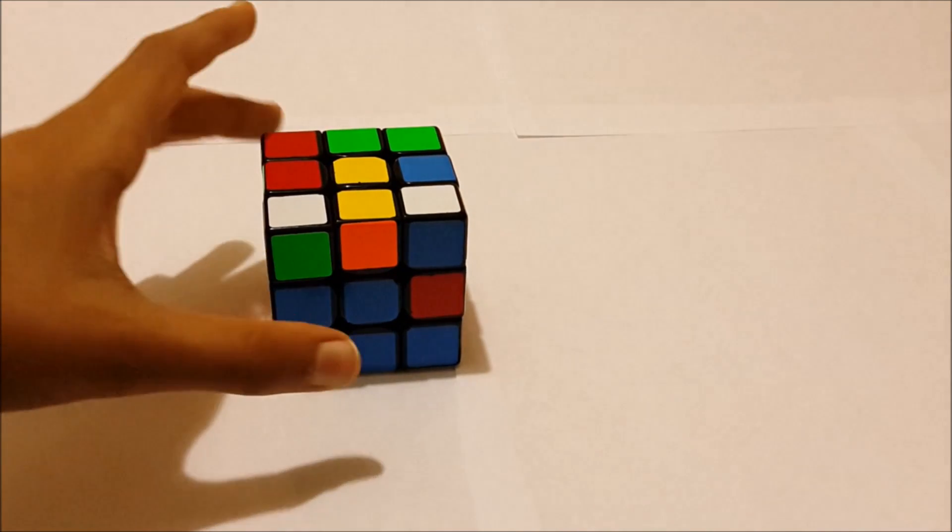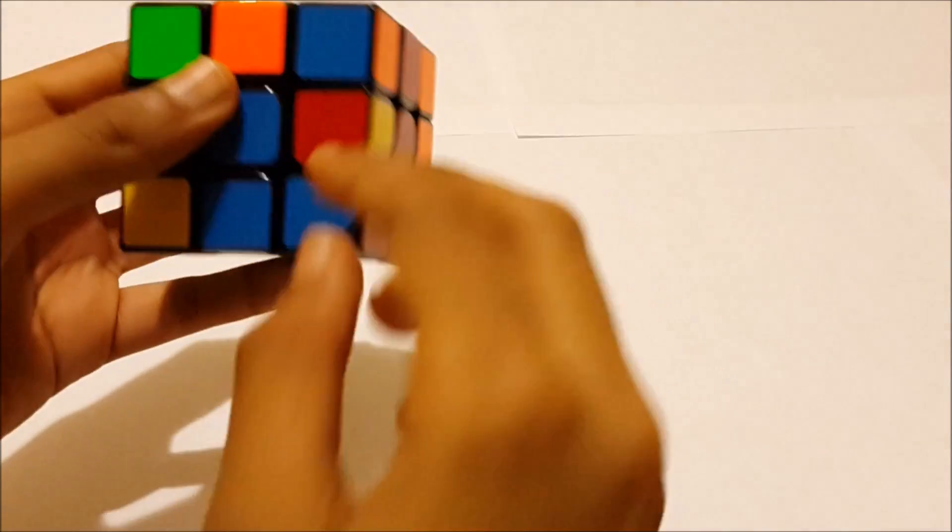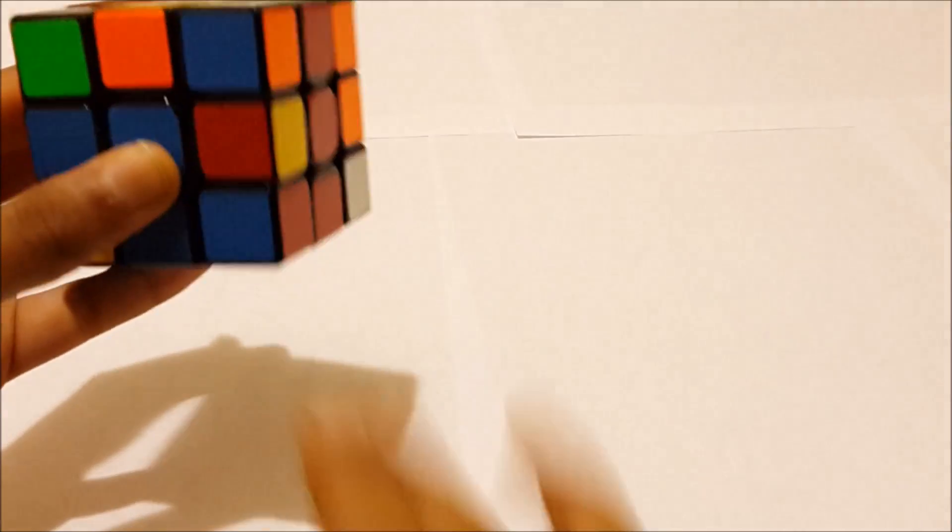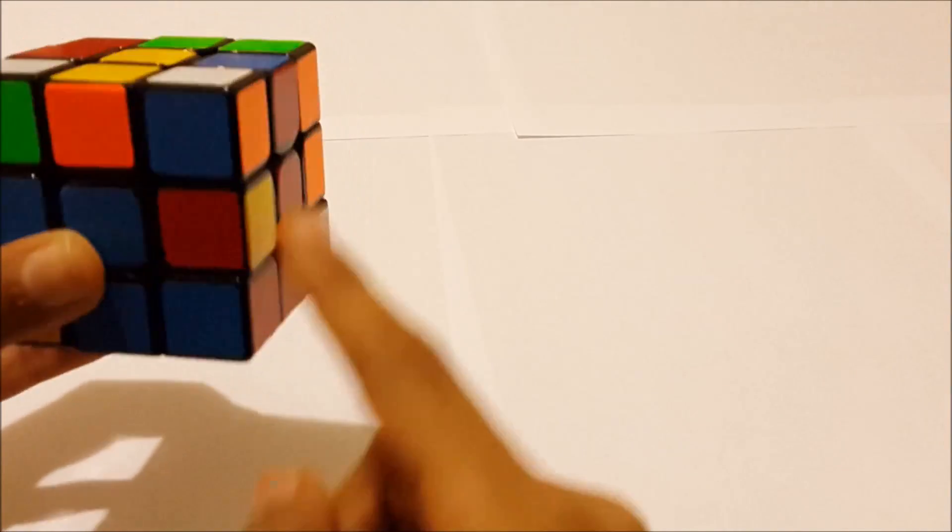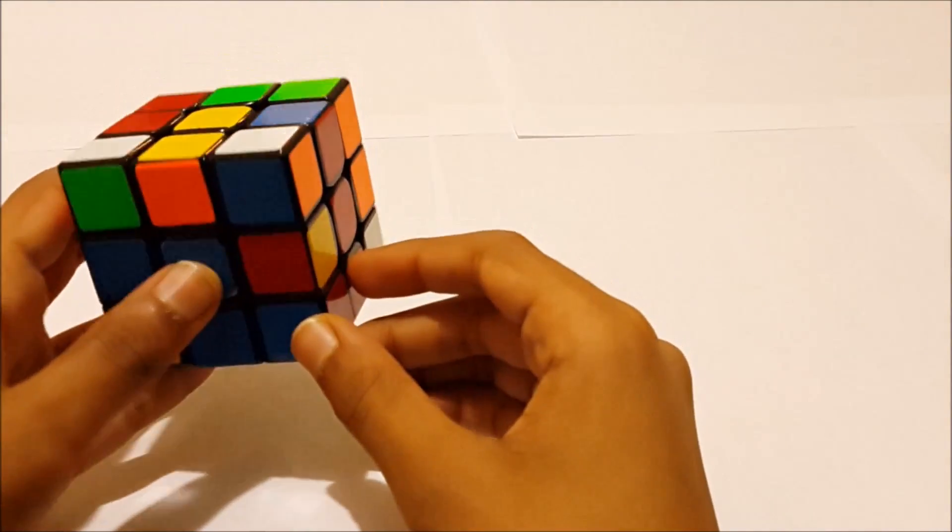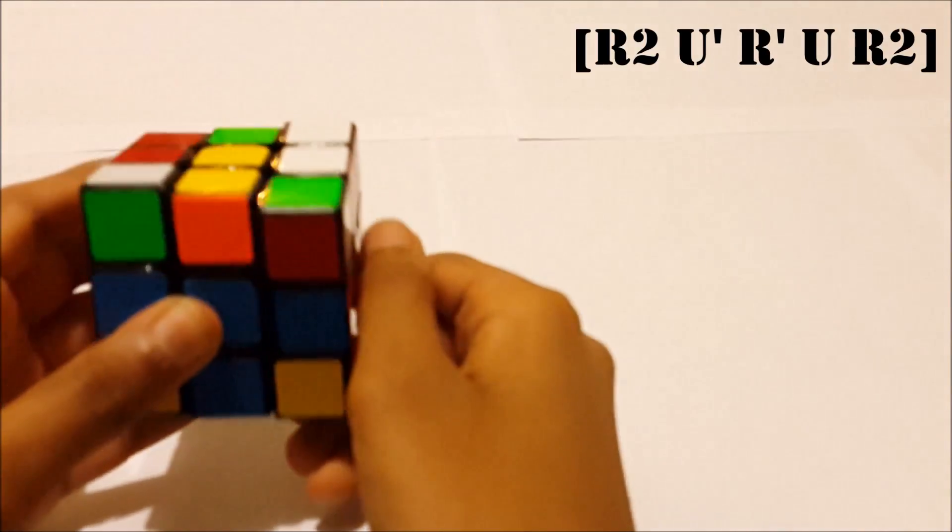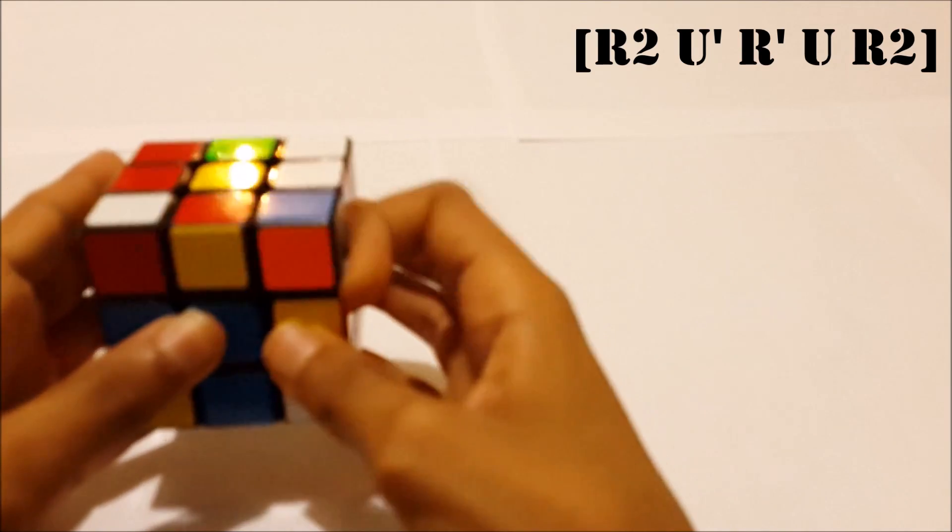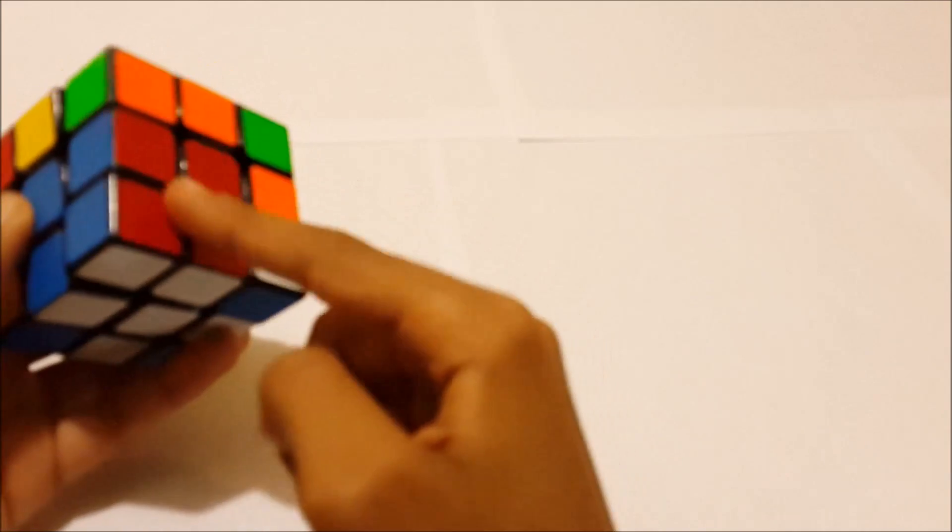So the first case here is where we have a corner already in place and the respective edge is up here. And the corner would be on the front face whereas the edge is on the right face. So in this scenario what we would do is R2 U' R' U R2 and that would solve it.